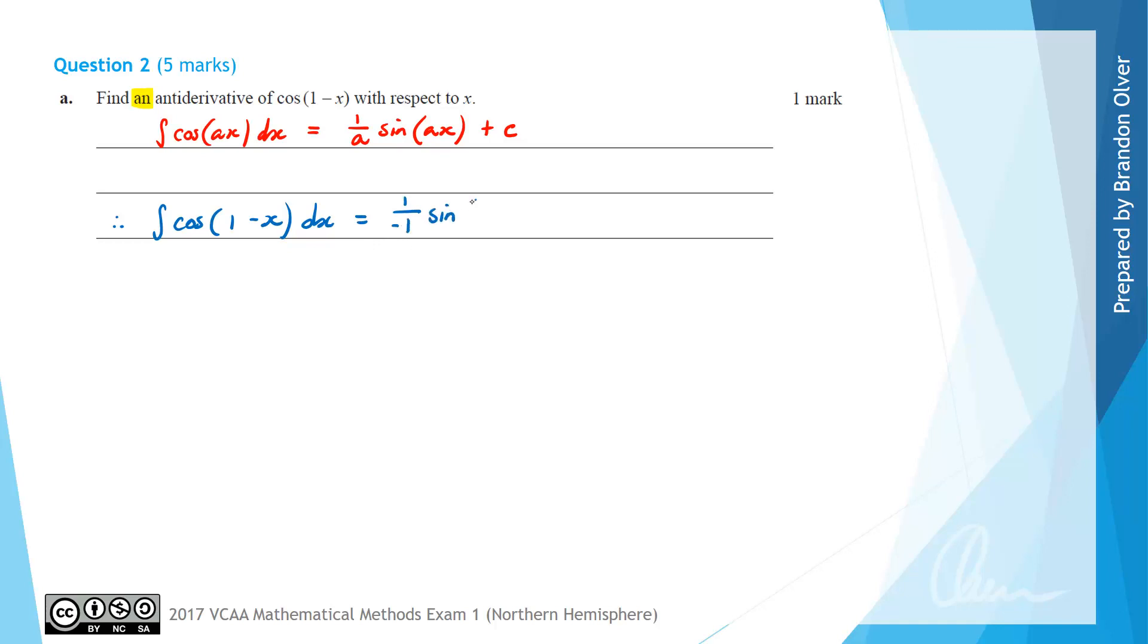Then it's going to be sine and we're still going to have 1 subtract x in the brackets. Because it's an antiderivative as we discussed before we can just leave the plus c as being plus 0. So this is simply equal to negative sine of 1 subtract x. That's the answer to part A of this question.